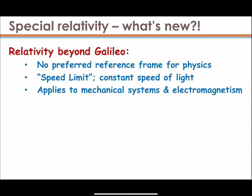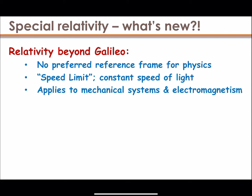In the second part of the course there's special relativity — this is relativity as Galileo thought about it, but going beyond Galileo in the sense that there is no preferred reference frame for physics. We add in Einstein's extra condition: the idea of a speed limit, the constant speed of light. Furthermore, it applies to mechanical and non-mechanical systems — electromagnetic systems — actually all of physics.